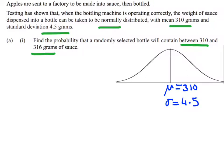Then I'm going to look at the question - it talks about being between 310 and 316. So I'll mark 310 and 316, and we want the probability, so I want that area between those points.